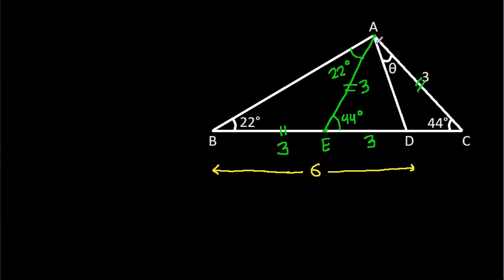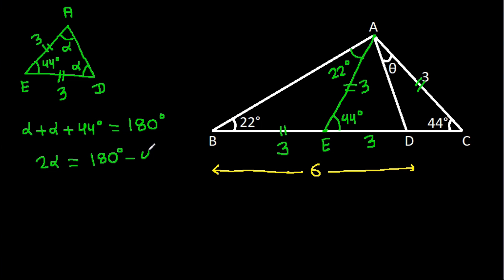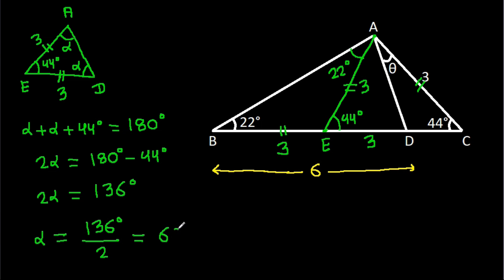Now in triangle ADE, AE equals DE equals 3, so these two base angles are equal. Call each angle alpha. The angle at D is 44 degrees. So alpha plus alpha plus 44 degrees equals 180 degrees, giving 2 alpha equals 136 degrees, so alpha equals 68 degrees.